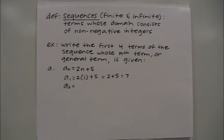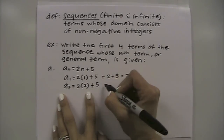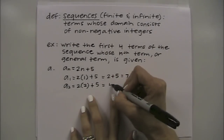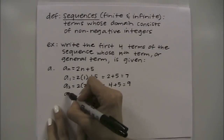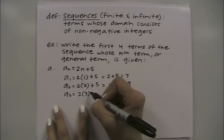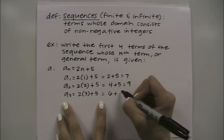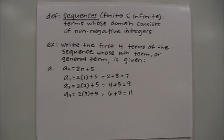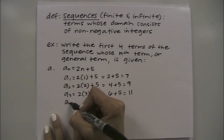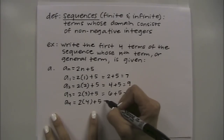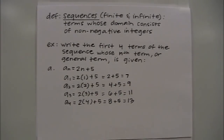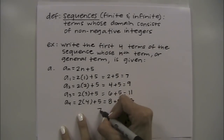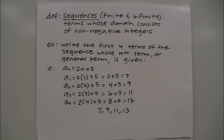Then follow the same pattern to find your next term, a sub 2, by plugging in 2 for n, and use order of operations to simplify. We wanted the first four terms starting with a sub 1, so that gives us a sub 2, a sub 3, and a sub 4. When it says write the first four terms of a sequence, you'll typically write it as a list of values.